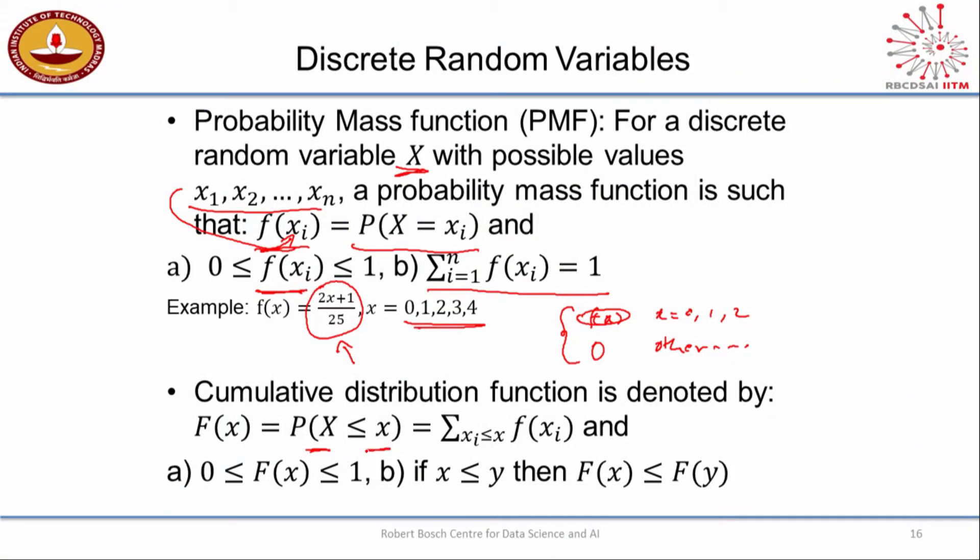You can actually play around with this, substitute the different values, and you will see that you get individual probabilities and when you add each of them up you'll actually be getting one. So this is an example of a probability mass function. Now we're going to define something new called the cumulative distribution function, which captures the probability that this random variable takes on a value less than or equal to a particular x.